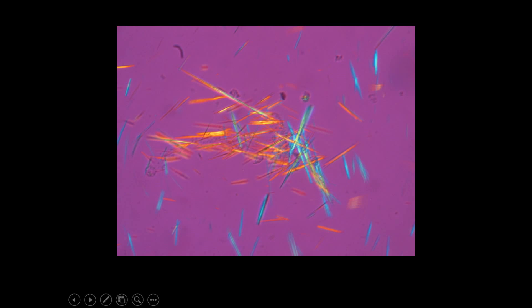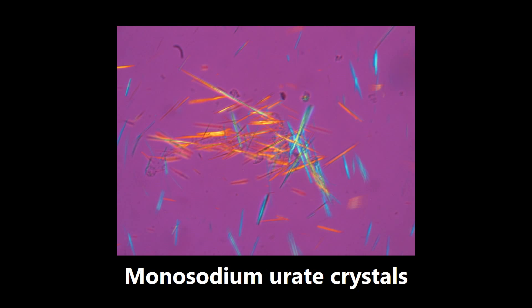This next one is an example of monosodium urate crystals, seen in gout. You need to know the name of the crystals — monosodium urate crystals. They are negatively birefringent and needle-shaped. As opposed to pseudogout, which is positively birefringent and has more of a rhomboid or diamond-shaped appearance.